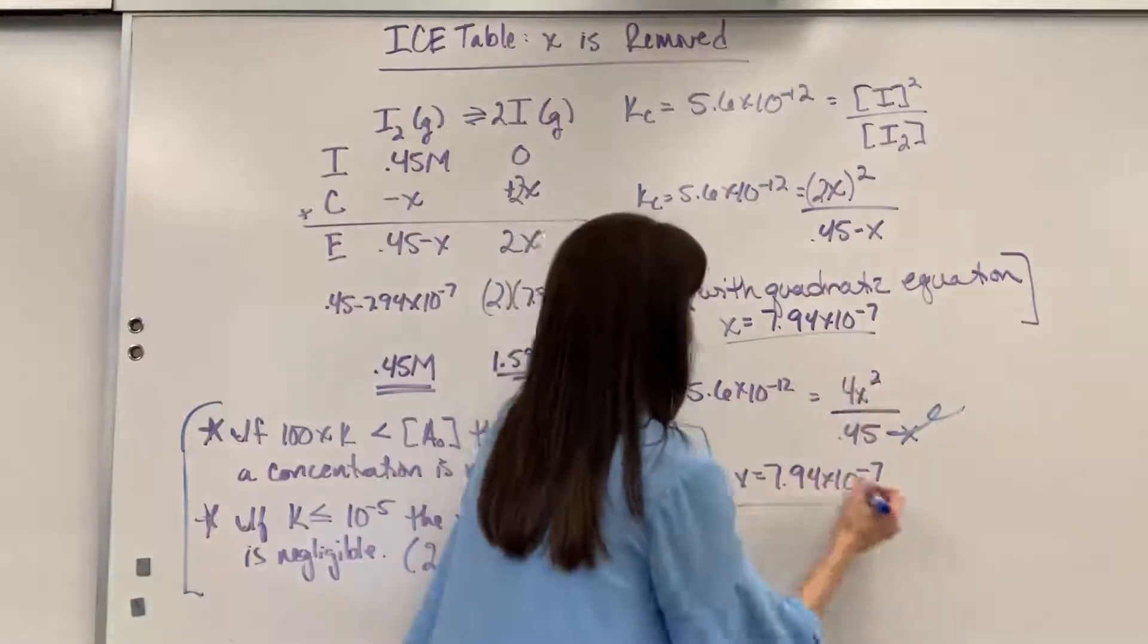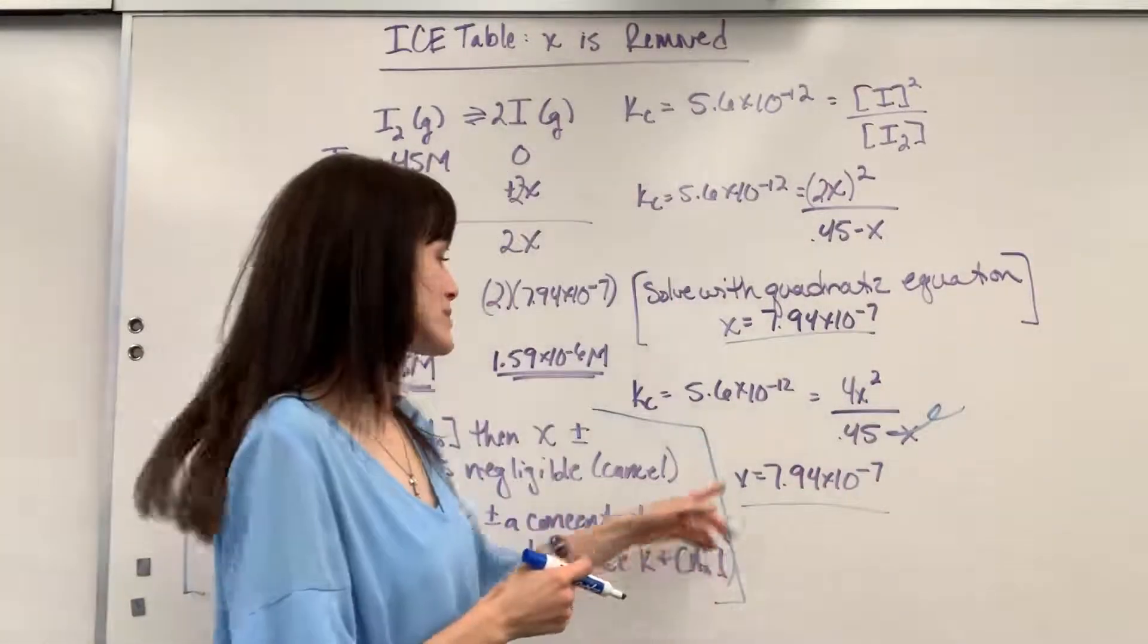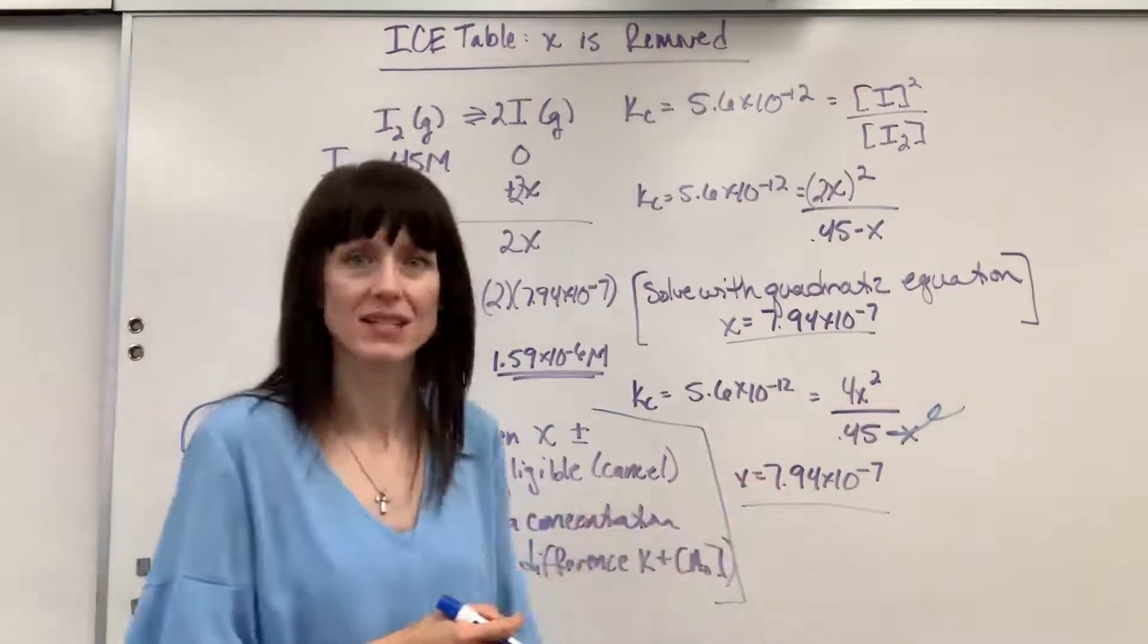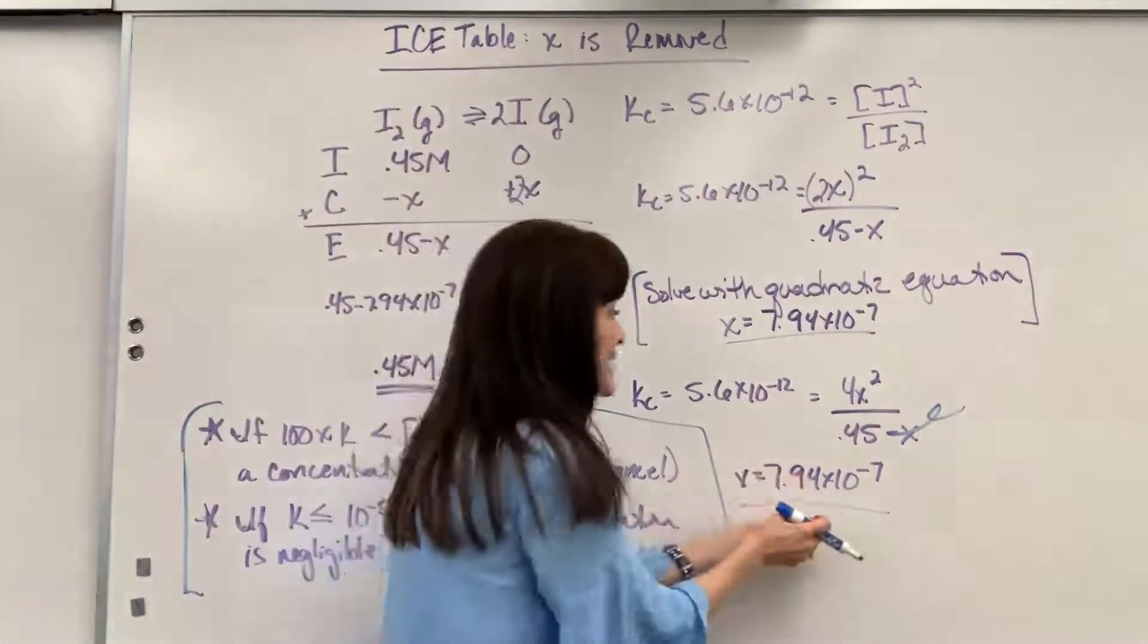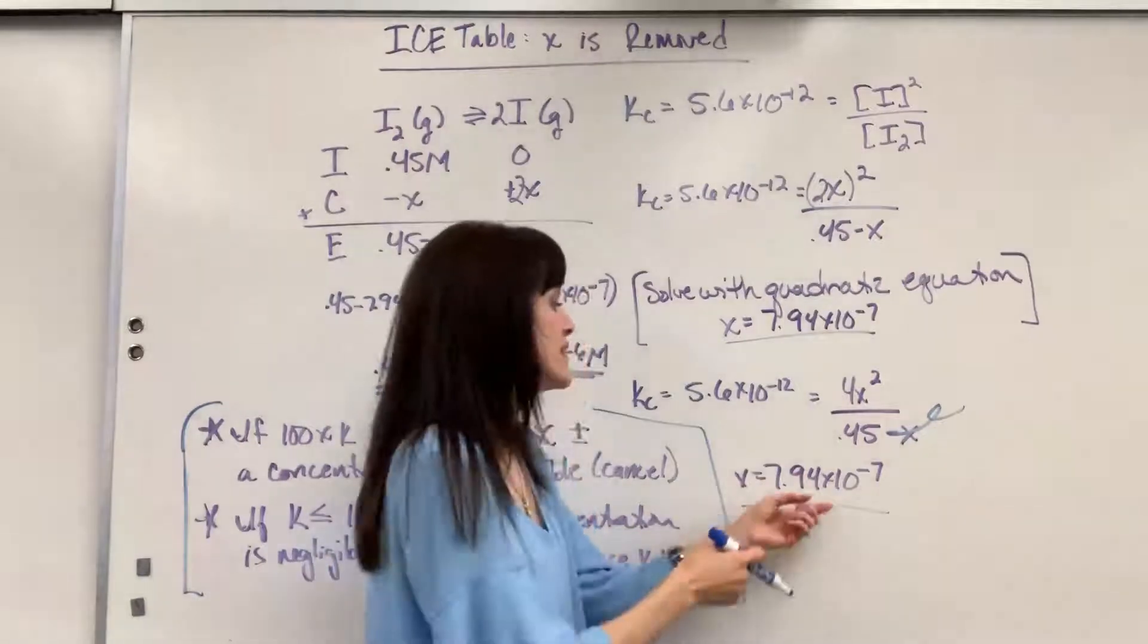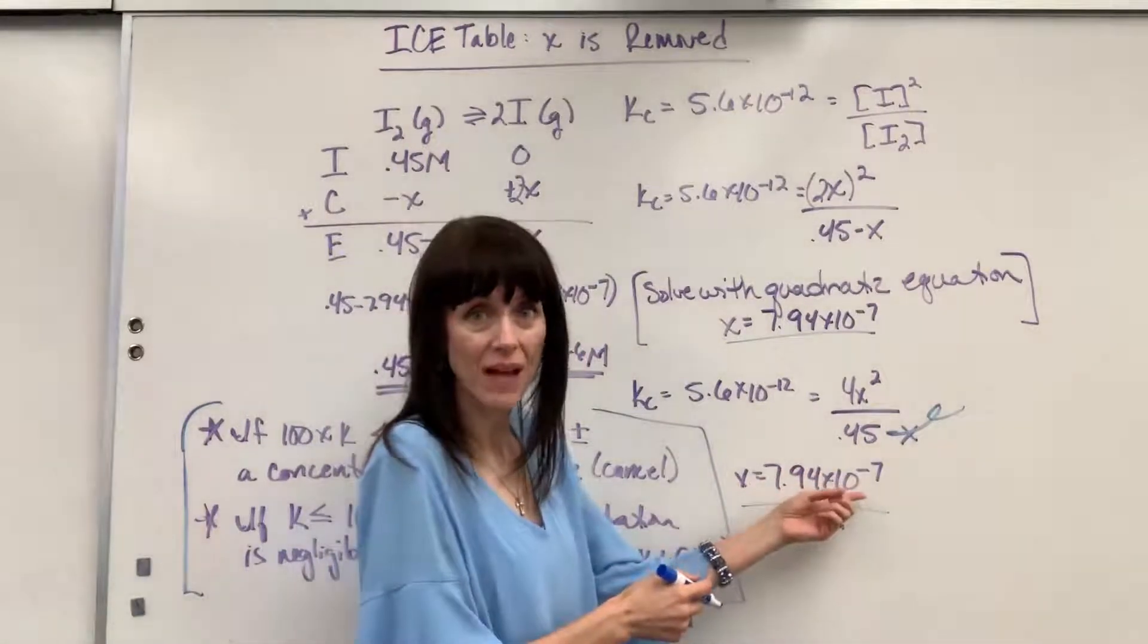They are the same. x equals 7.94 times 10 to the minus 7. Why? Here it is. Look at x. x is teeny tiny. This is times 10 to the minus 7 magnitude.